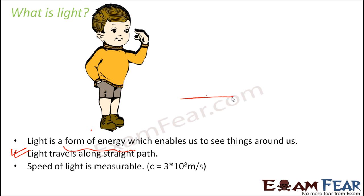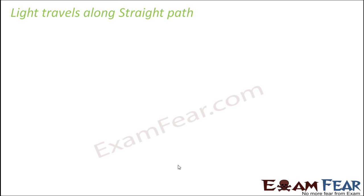The speed of light is a high number and it is approximately 3 × 10⁸ meters per second. This is quite a great speed, and light travels with this speed. So as mentioned, light travels along a straight path.